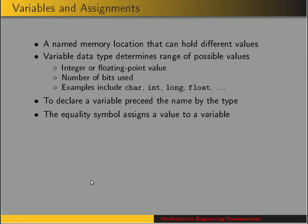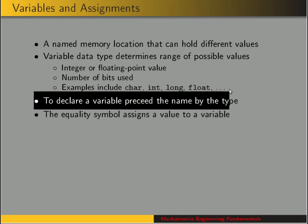Programs typically have variables. A variable is a memory location that has a name — we're assigning a name to a memory location, and in that location we can put different values. Variables have data types, which determine the range of possible values — for example, it could be an integer or a floating point value. The data type also determines the number of bits used, that is, how big that memory location is. Examples of data types are char, int, long, float, et cetera.